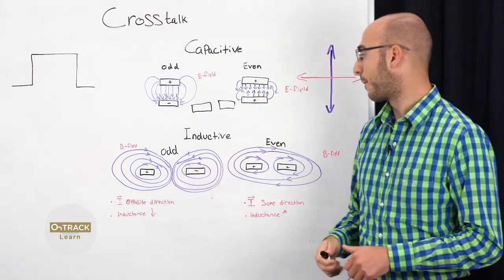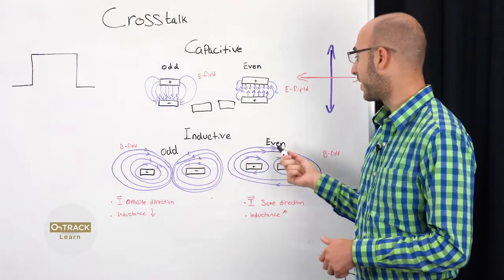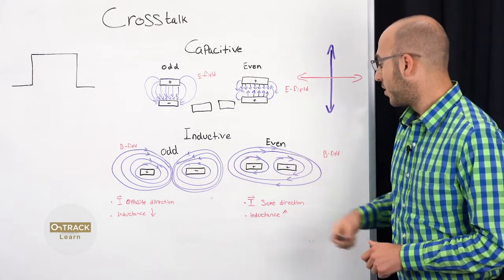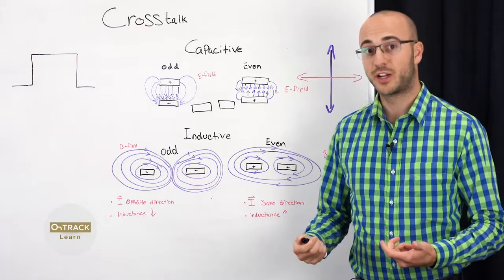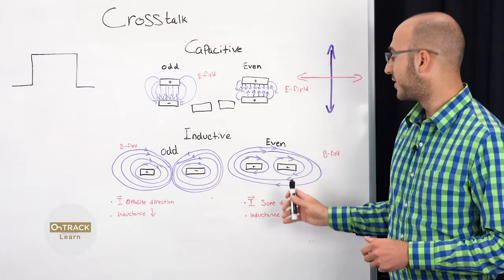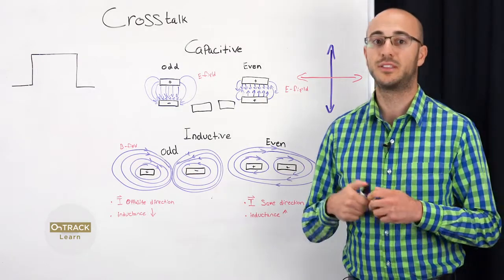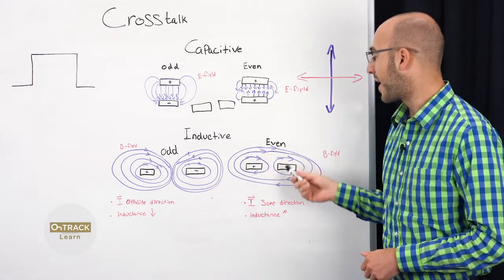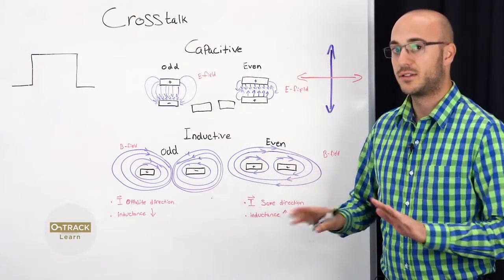So inductive crosstalk. Again, we have odd mode, even mode, in phase and out of phase. When it's in phase, the current is going in the same direction. And the inductance goes up, your inductive crosstalk goes up. And you can see they're sharing the same magnetic field here. Not good.